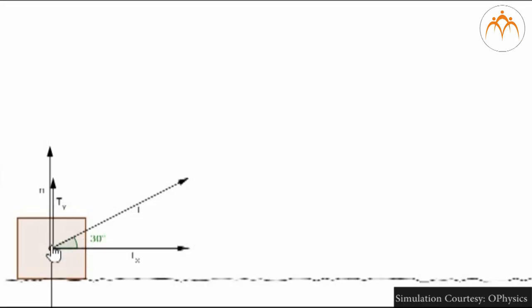In this oPhysics simulation, a block is pulled at an angle denoted by T. As the block is pulled at an angle, force applied on it has two components. One in the direction of the displacement, Tx, and one perpendicular to the direction of displacement, Ty.